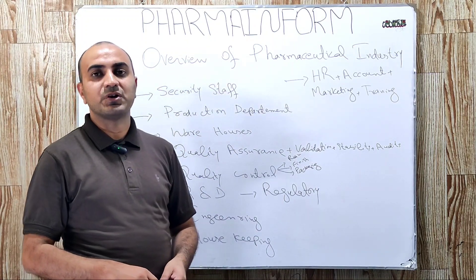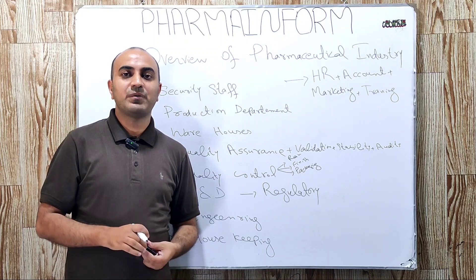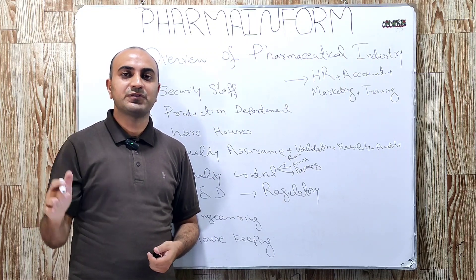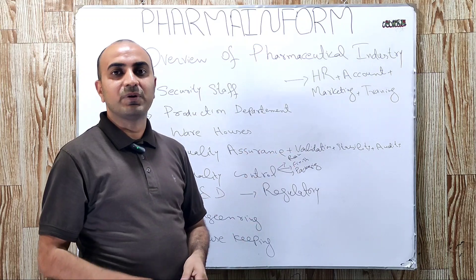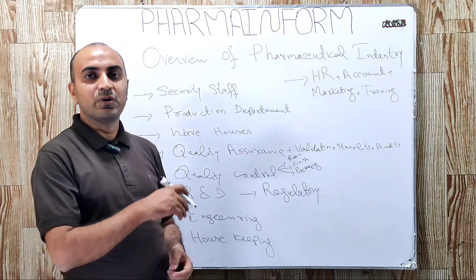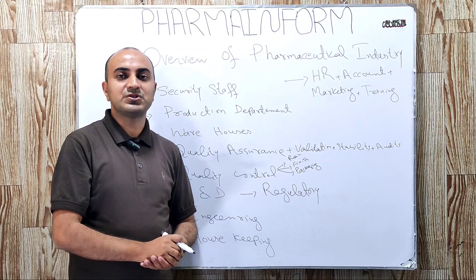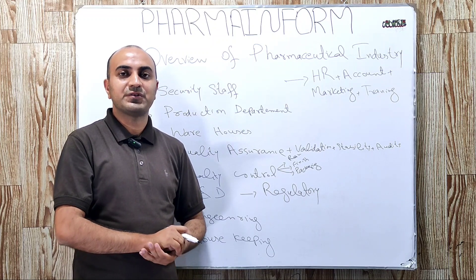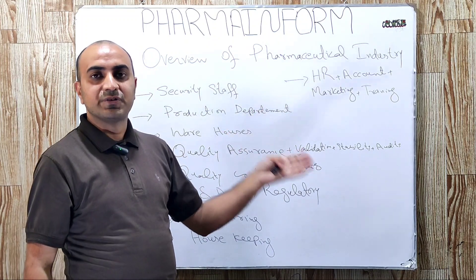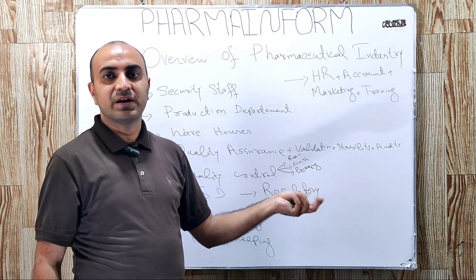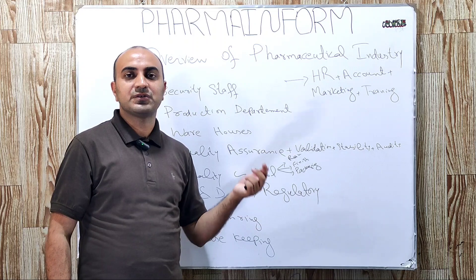Next is the production department, which is the backbone of pharmaceutical industry where products are manufactured. The production department may be divided according to dosage forms — which type of dosage forms are manufactured. We can divide it into subsections like tablet manufacturing section and syrup manufacturing section.